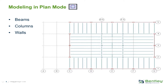Lateral beams, columns, and walls will be modeled in the RAM Modeler Plan mode. When generating your structural model, you will need to designate which members are gravity and which members are lateral. This can be done by setting the framing option to either gravity or lateral when first laying out a particular beam, column, or wall. Or you can use the Change Properties command to modify an existing member.